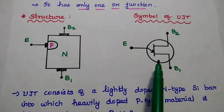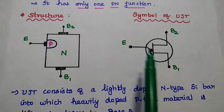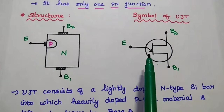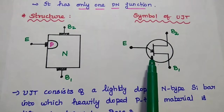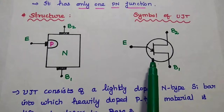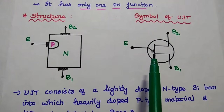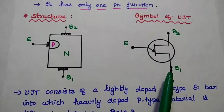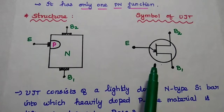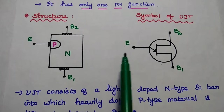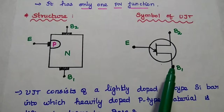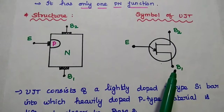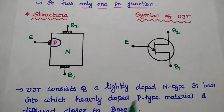This is the symbol representation of UJT — emitter, base 2, and base 1. Here, the arrow at an angle towards the junction represents the direction of conventional current from the emitter to base 1. Maximum amount of current is flowing from emitter to base 1, hence it is represented towards the base 1 terminal.